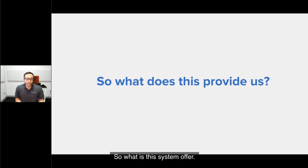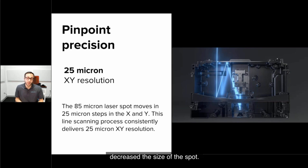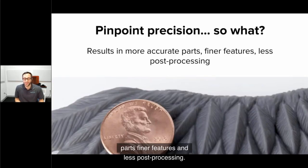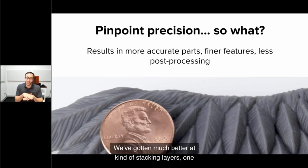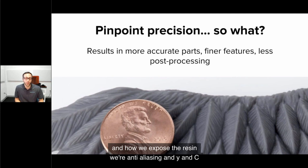This system offers pinpoint precision. With the precision stepper motor, we have full steps of 25 microns, and the galvanometer pointing accuracy is 2.5 microns. This gives us 25 micron XY resolution. The laser spot is now 85 microns, so finer features will be on that scale. That offers more accurate parts, finer features, and less post-processing. We're anti-aliasing in X, Y, and Z, which allows layer lines to nearly vanish.